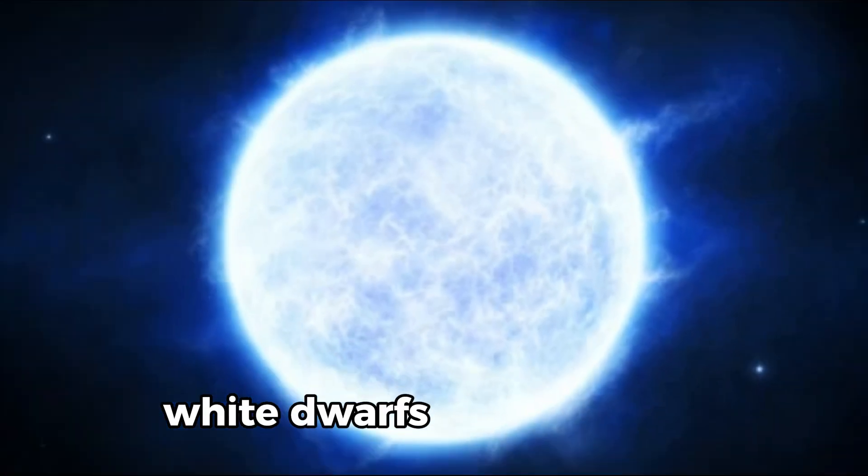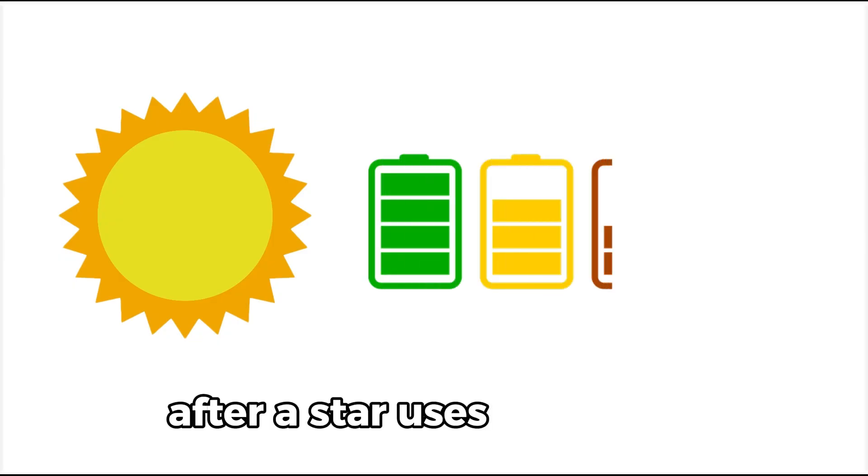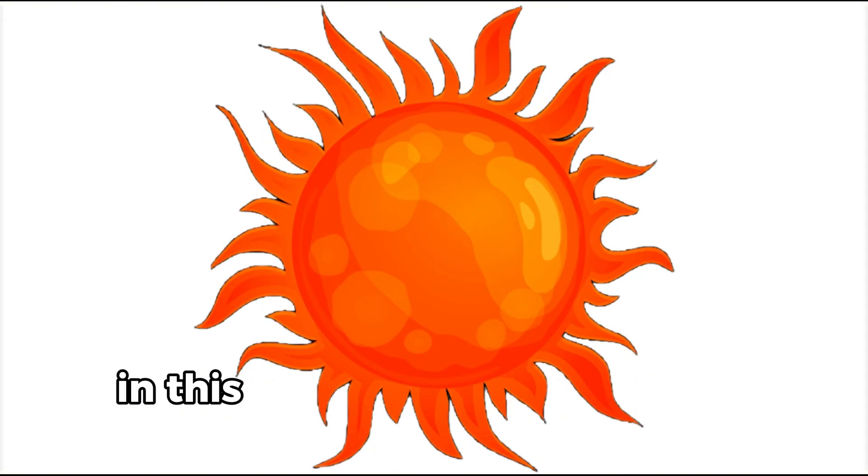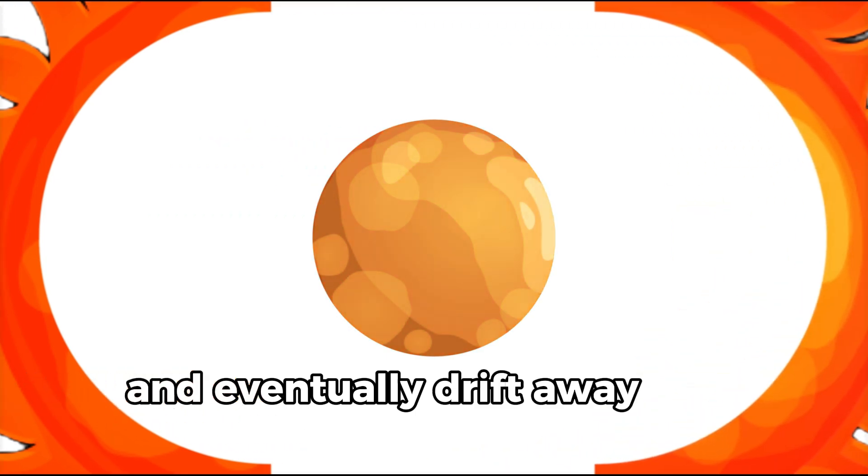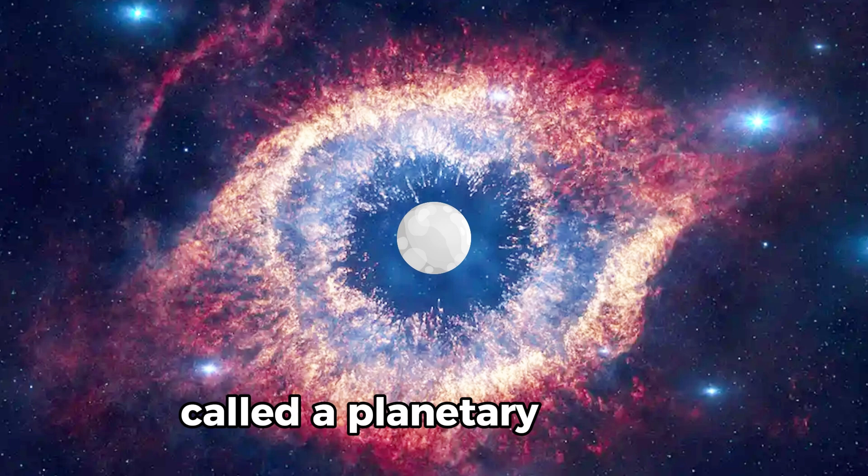White dwarfs are the remains of stars that were once like our sun. After a star uses up its fuel, it grows much larger and becomes a red giant. In this stage, the outer layers of the star expand and eventually drift away into space, creating a glowing shell of gas called a planetary nebula.